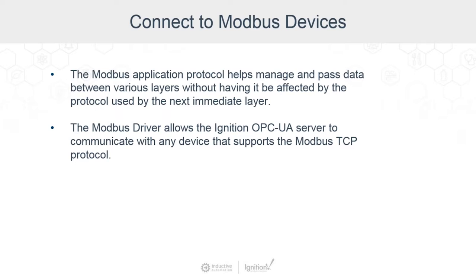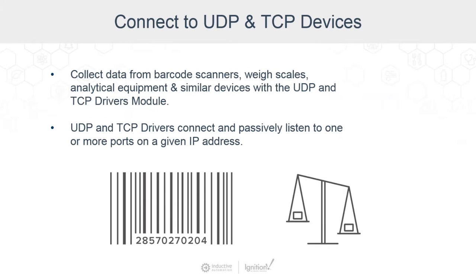Modbus TCP, also known as Modbus TCP/IP, is a simple Modbus protocol running on Ethernet over a TCP interface. The Modbus driver allows the Ignition OPC UA server to communicate with any device that supports the Modbus TCP protocol. It's a generic, simple driver that allows PLC support. You can collect data from laboratory information management systems, or LIMS, with the UDP and TCP drivers module. Those LIMS devices include barcode scanners, weigh scales, and analytical equipment of various sorts. The UDP and TCP drivers are configured to connect and passively listen to one or more ports on a given IP address. Rules are configured that dictate how the incoming data is interpreted.